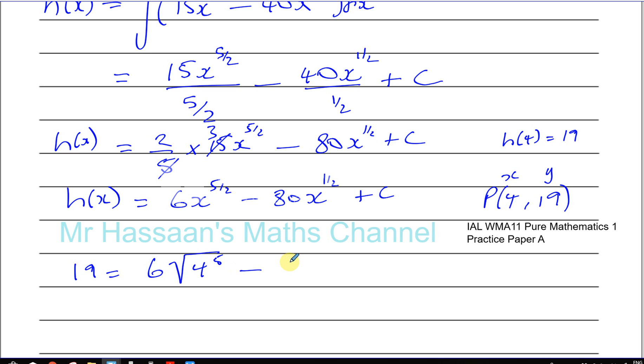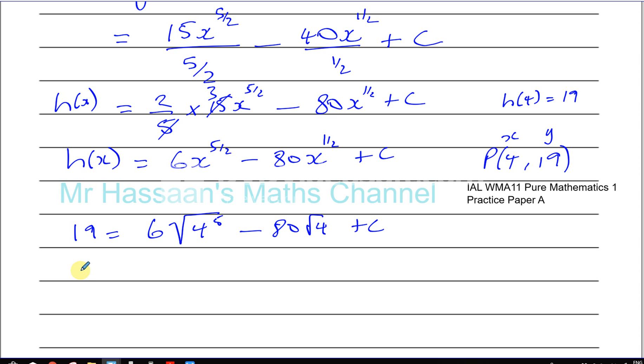And here you've got minus 80 times, where x to the power of a half is the square root of 4, and plus C. So we should be able to find what C is now.